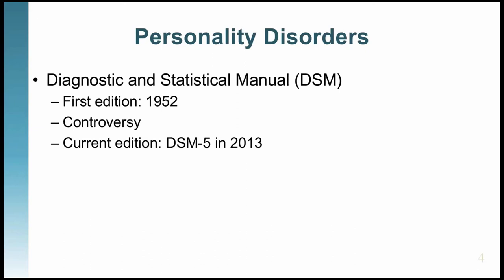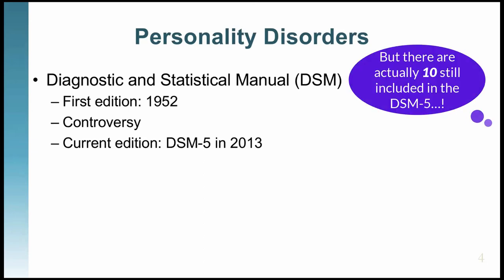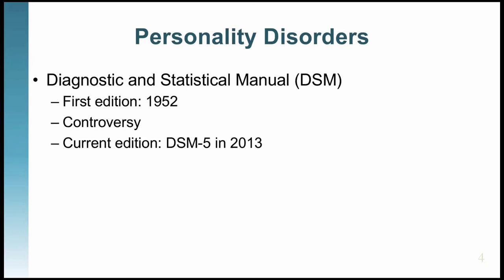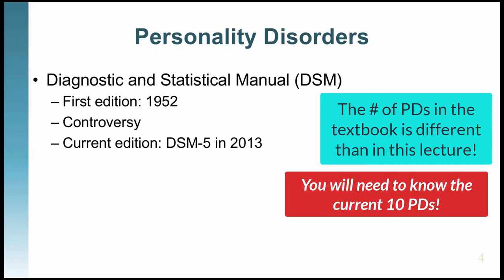There was such resistance from clinicians — everybody would have had to change how they diagnosed personality disorders — that they decided they absolutely didn't want to do that. So what they ended up doing is putting this new dimensional diagnosis into the appendix. As a result, the Funder textbook only discusses six personality disorders, even though there are actually ten currently diagnosed. The idea was to keep six and use dimensional assessment, but that plan was shelved. What you'll be assessed on is what I talk about in this lecture.